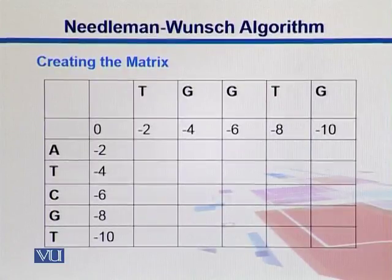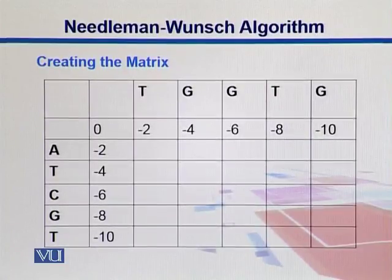On one side we have one sequence: T, G, G, T, G. On the other side we have another sequence: A, T, C, G, T.